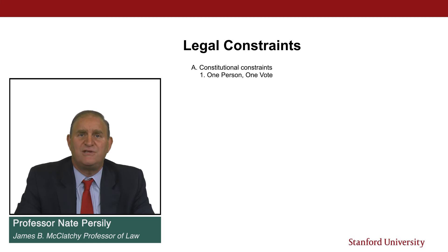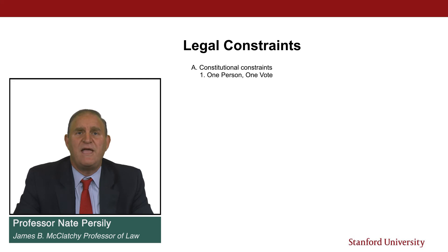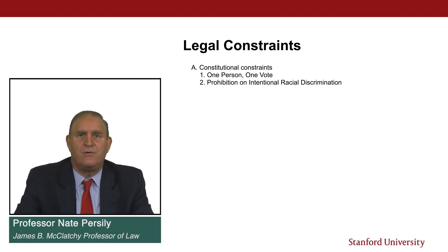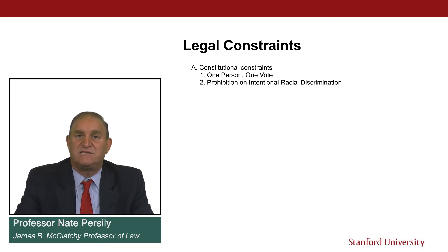There are different requirements for congressional elections than for state elections — a much stricter rule of population equality applies to congressional districts than for state or non-congressional districts. But the basic constraint for all levels of government is one person, one vote: districts must have equal numbers of people. Secondly, there's a prohibition on intentional racial discrimination — you cannot use the redistricting process to intentionally discriminate against a racial group. If a legislature is trying to diminish the power of African-Americans, it could be subject to litigation under the 14th Amendment's suspect classification prong.